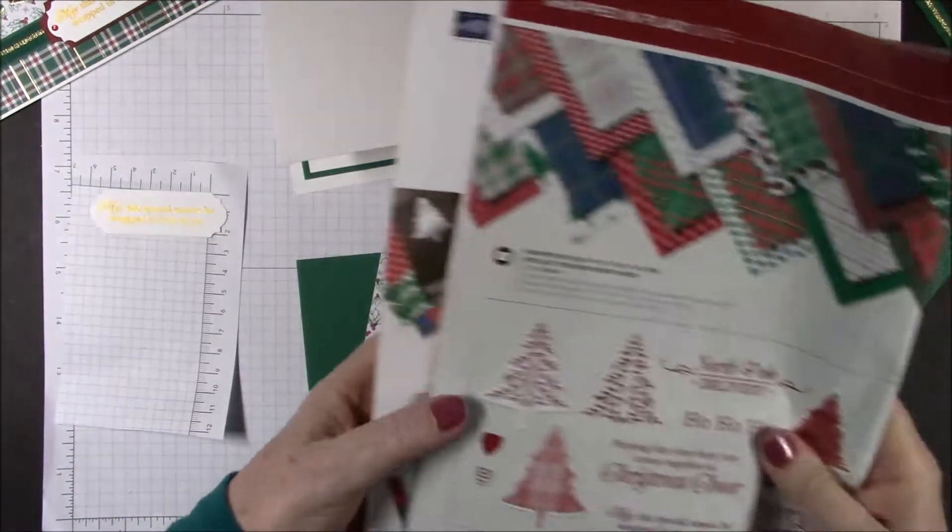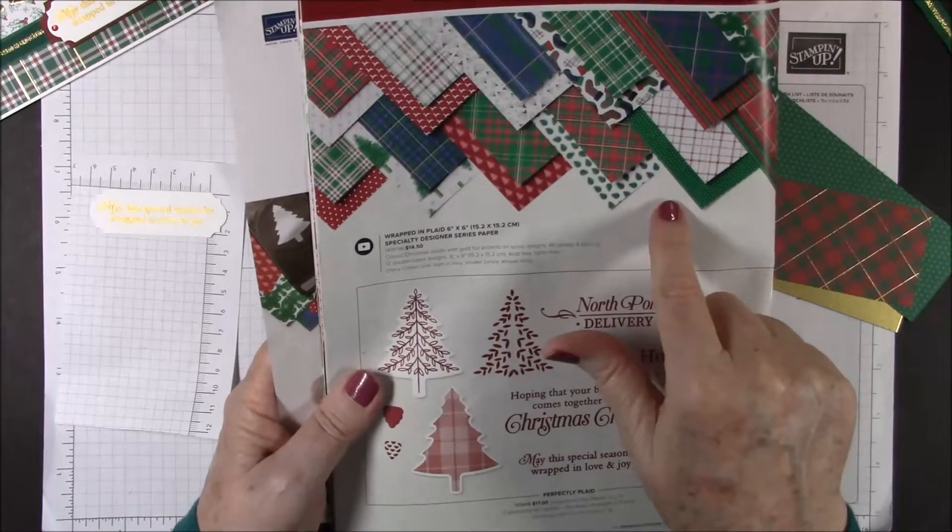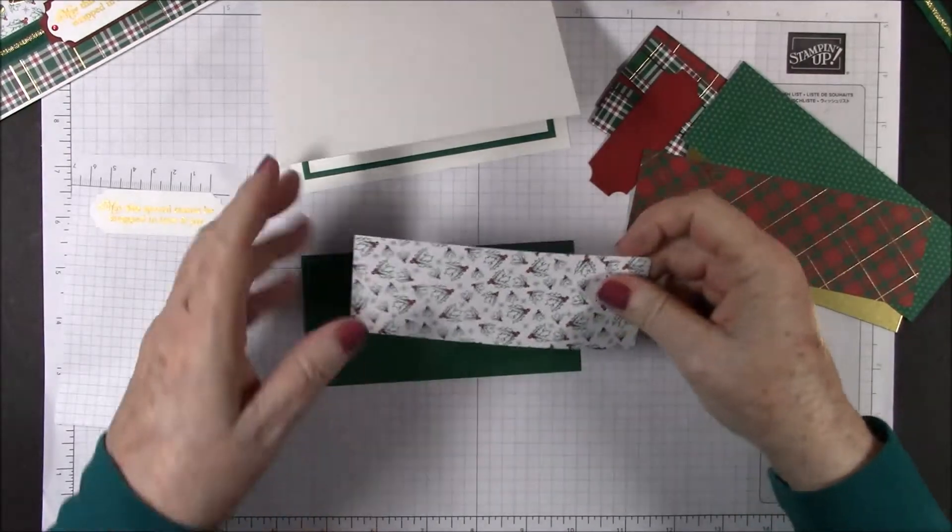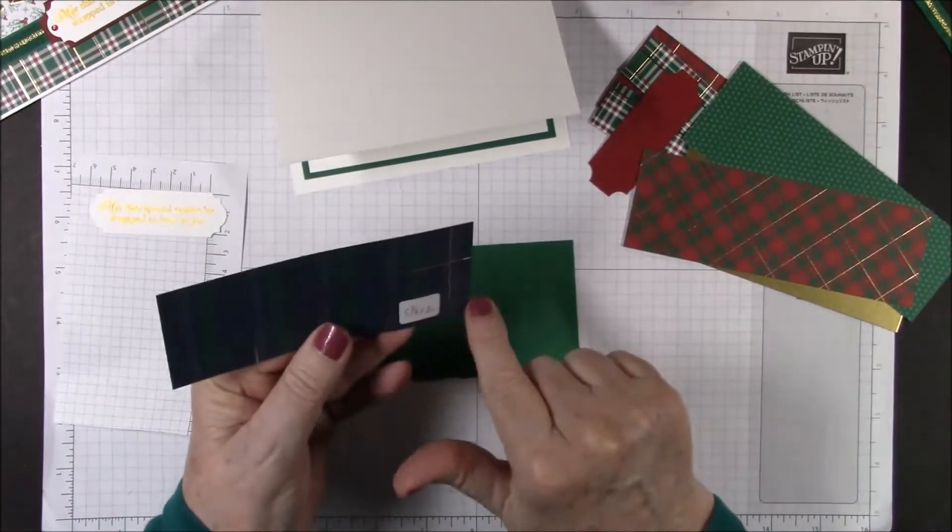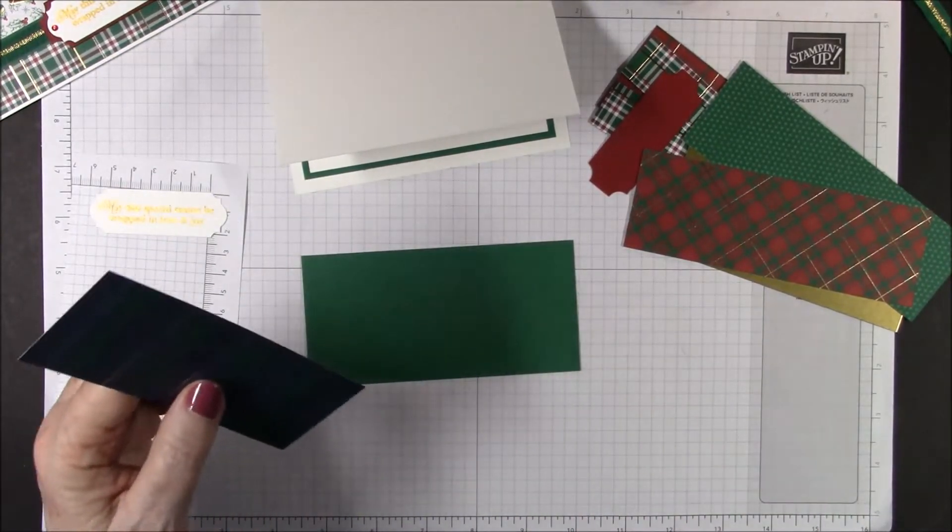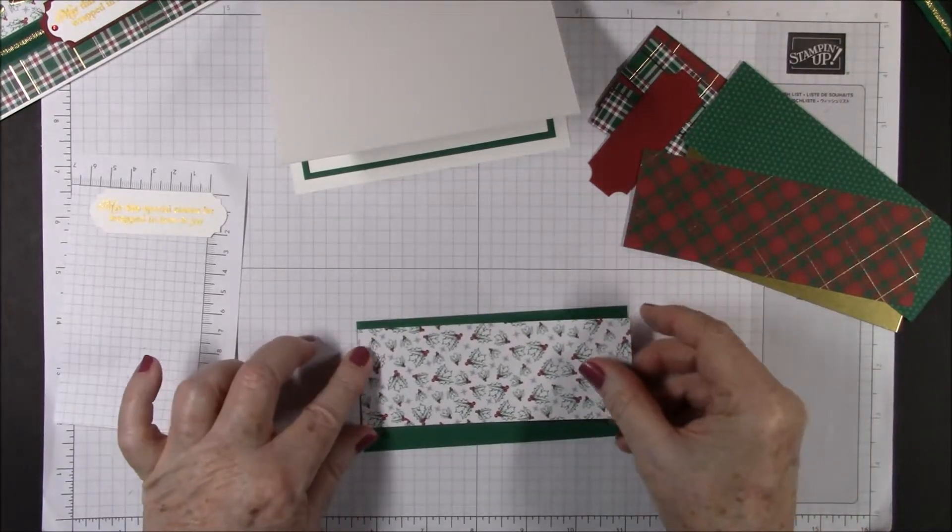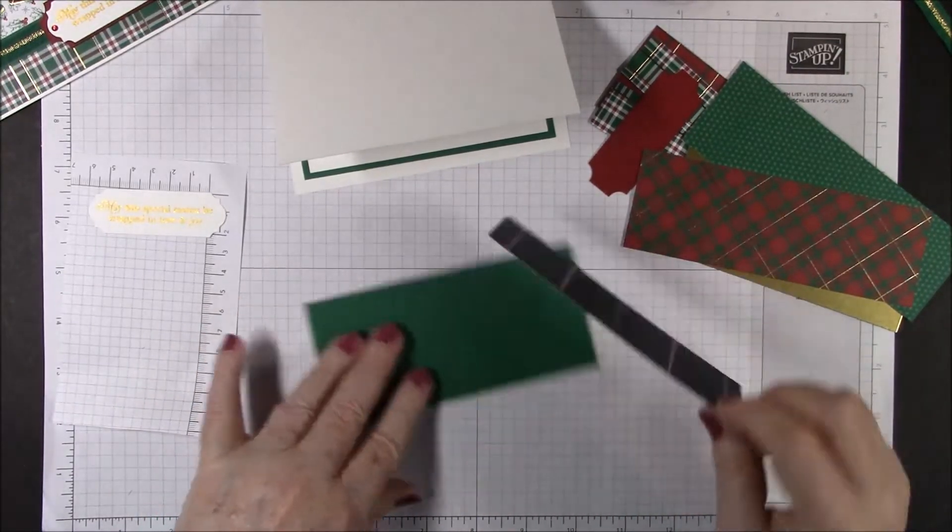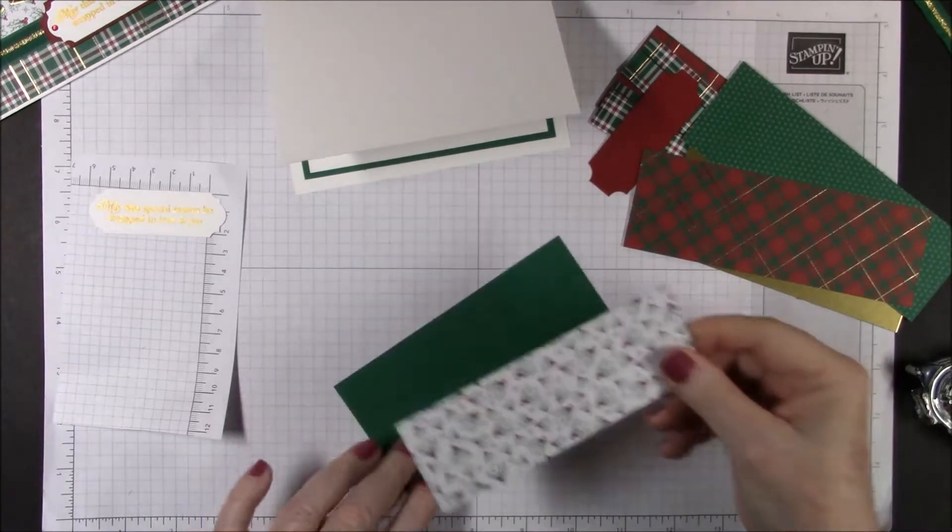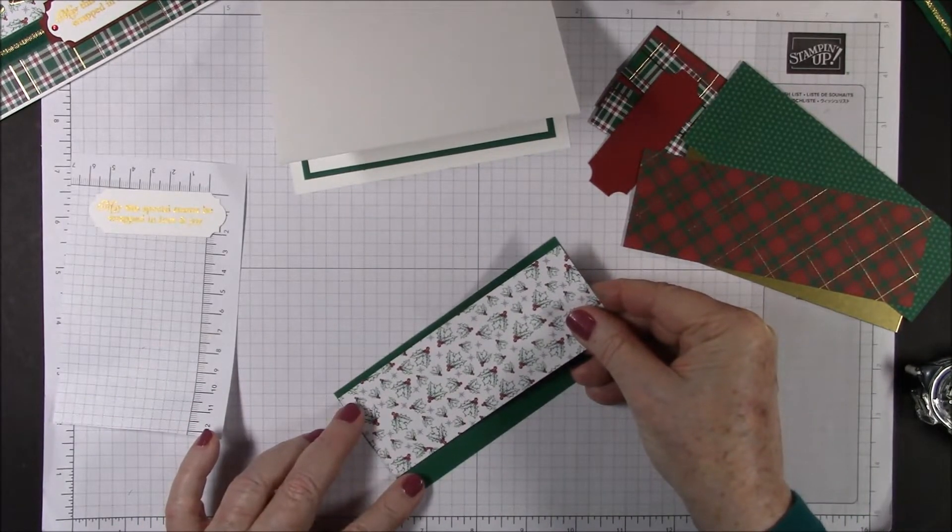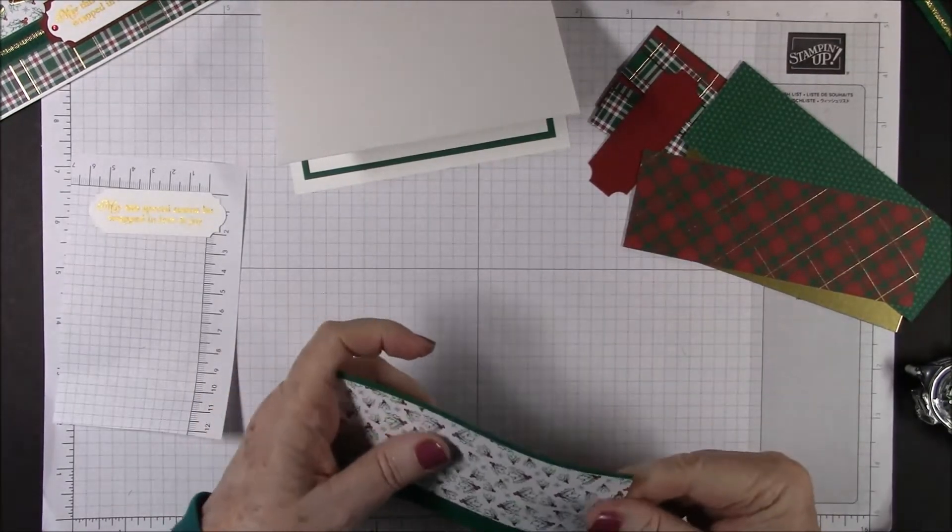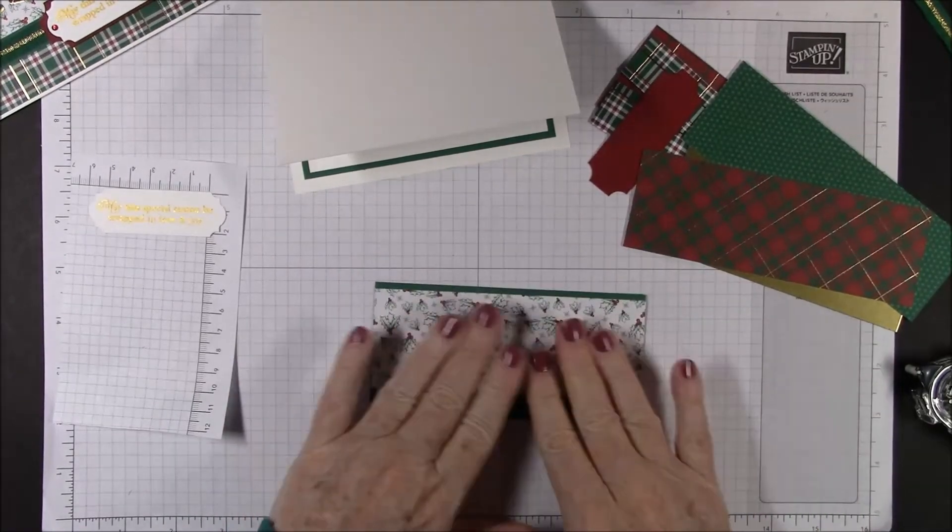The DSP that we're using is the wrapped in plaid DSP. It's six by six, on page 14 of the holiday catalog. I have a piece that is five and three eighths wide by two inches high, and I'm going to put that on my piece of shaded spruce with one eighth of an inch at the top. Just about one eighth. If it's a little bit more that's okay.